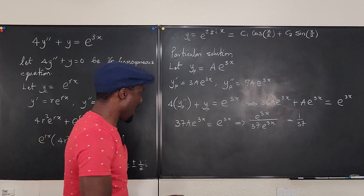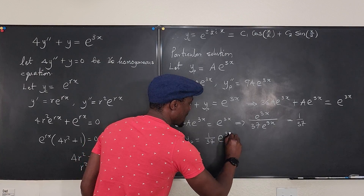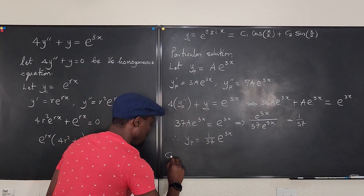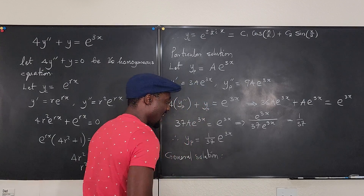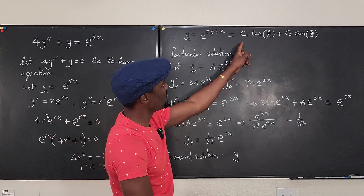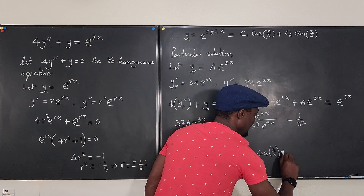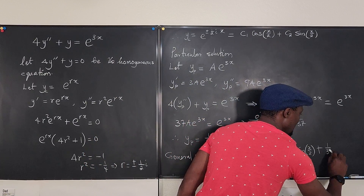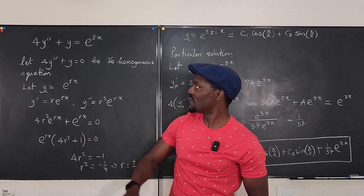So the particular solution is yp = (1/37)e^(3x). The general solution is y = yc + yp, which equals c₁cos(x/2) + c₂sin(x/2) + (1/37)e^(3x). That is the general solution to this differential equation.